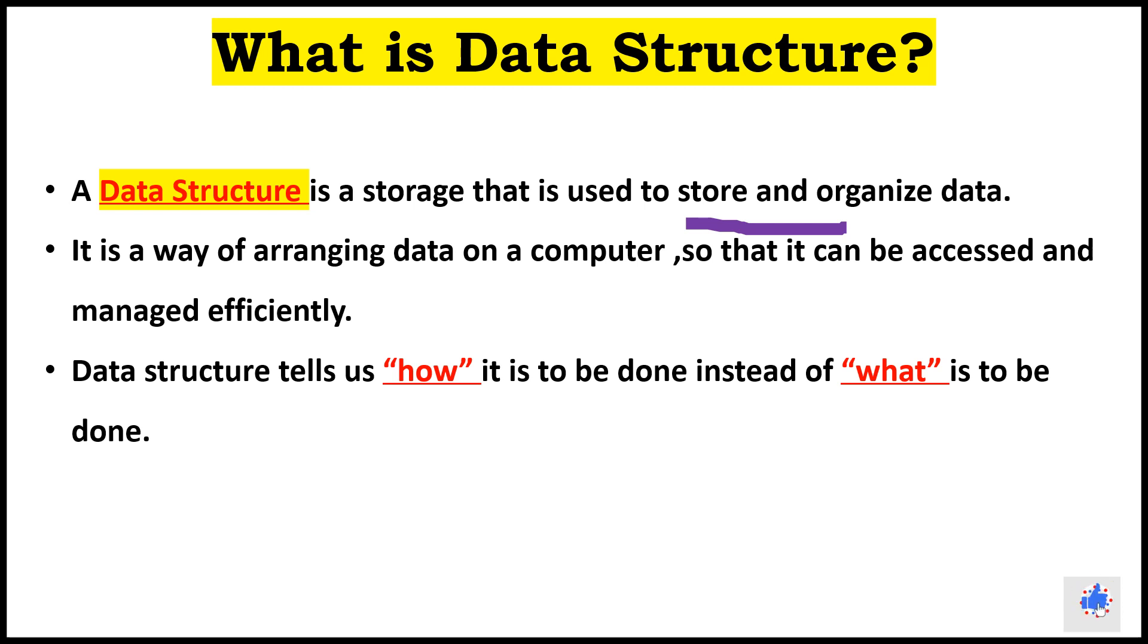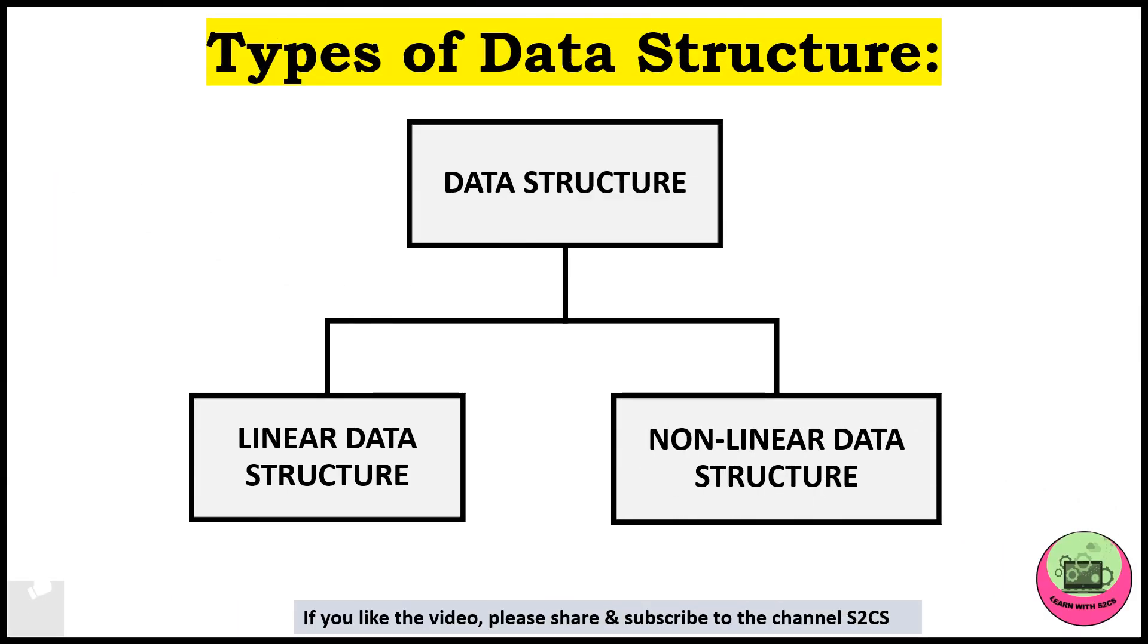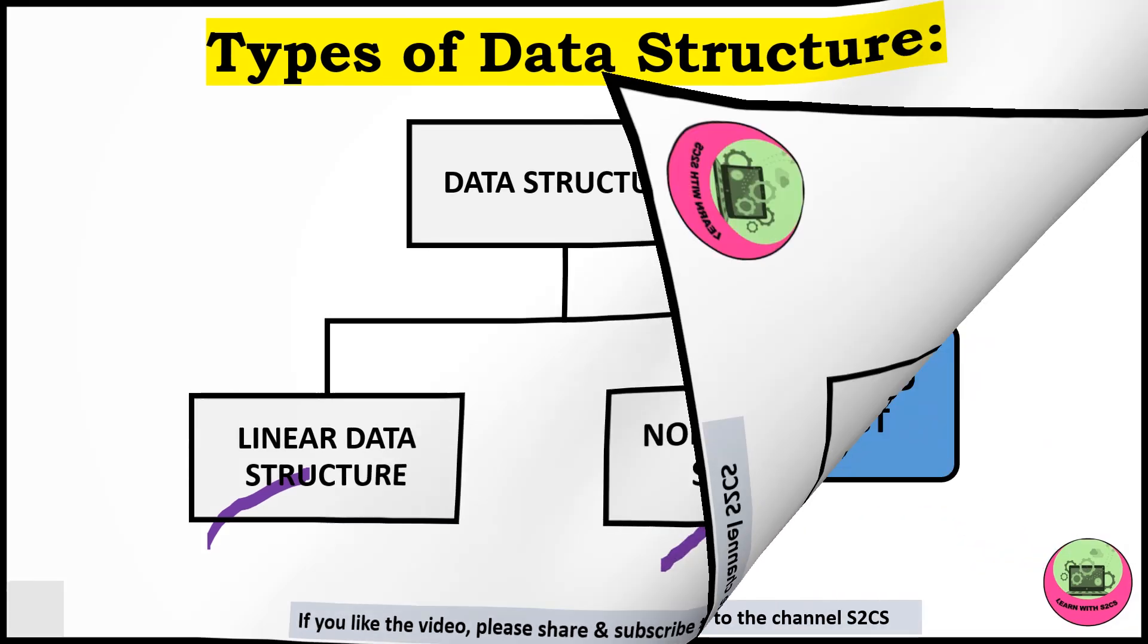Next is types of data structure. There are two types: first is linear data structure, second is non-linear data structure. What all are linear data structures: array, stack, queue, and linked list. We will understand each of these terms in short. If you want detailed videos on these structures, please comment down in my comment box.